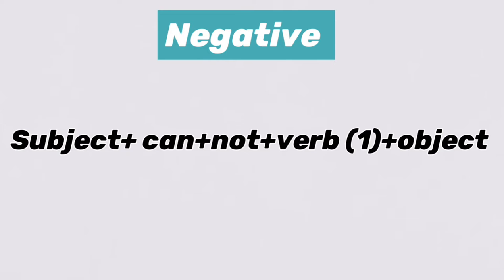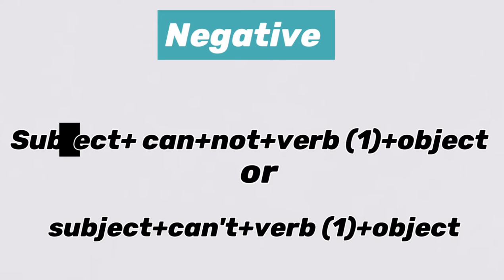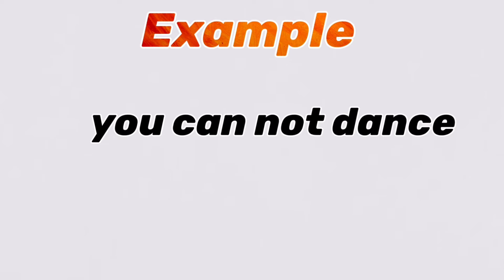Let's see the structure of the negative form of can: subject plus can plus not plus first form of verb plus object, or subject plus can't plus first form of verb plus object. Let's see some examples. You cannot dance.